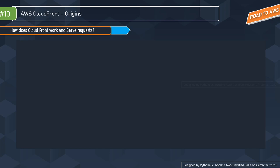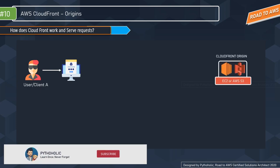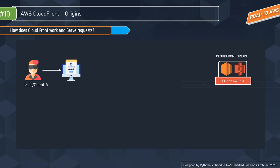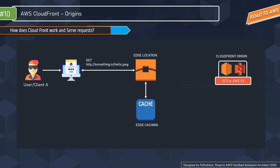Let's learn how CloudFront serves requests. When you make a GET request — for example, hello.jpg — it first reaches the edge location, which forwards the request to the origin. The content gets cached in the edge location and is sent back to the user. You can configure the caching timeframe in the settings.